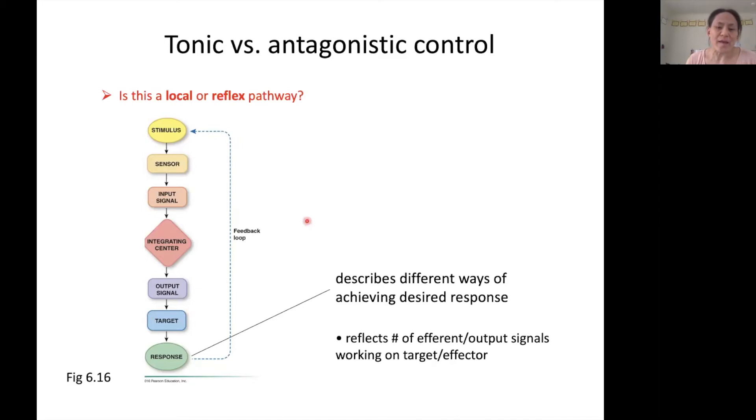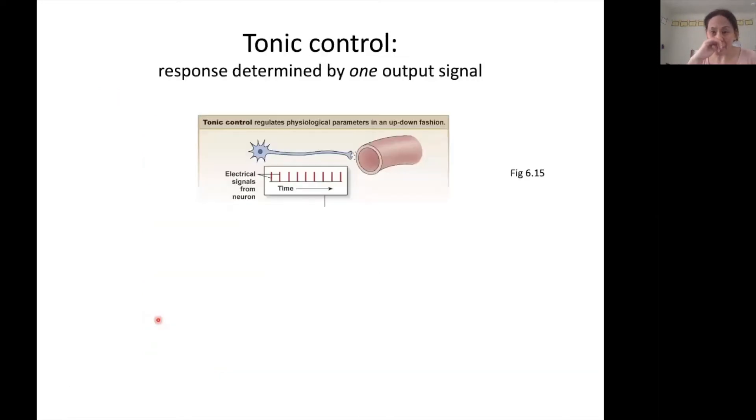And it reflects the number of efferent or output signals working on the target or the effector. So let's take a look at tonic control. So basically what happens in tonic control is that the response that we get from our target is determined by one output signal. So you can kind of think of this as sort of like the gas pedal in your car, right? You hit the gas pedal harder, you press on it harder, and that makes your car go faster. You let up on it and that makes your car go slower. So basically that one output signal is going to adjust up or down to give you a stronger or weaker response at your target.